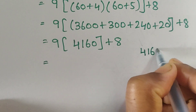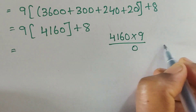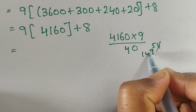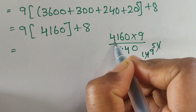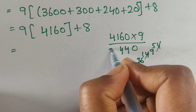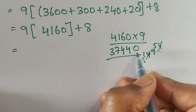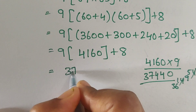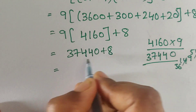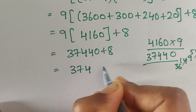So now 9 times 4,160. Multiplying: 9 times 4,160 gives us 37,440. Then adding the remaining 8: 37,440 plus 8 equals 37,448.